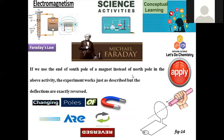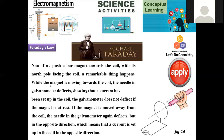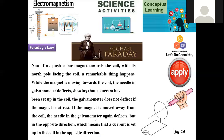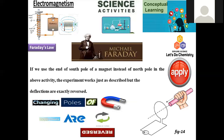If we use the south pole of the magnet instead of the north pole, the same activity is performed. The experiment works exactly the same way, but the entire direction is reversed. For example, if the galvanometer needle was moving clockwise with the north pole, it will now move anti-clockwise with the south pole. Changing the poles of the bar magnet reverses the deflections, so the entire system behaves reciprocally.